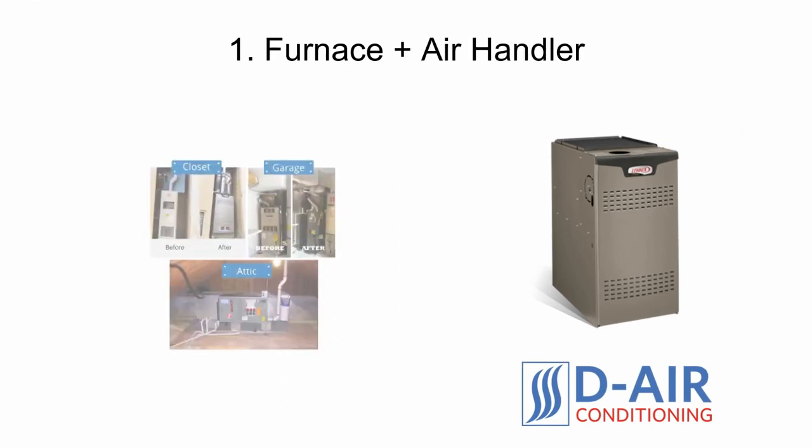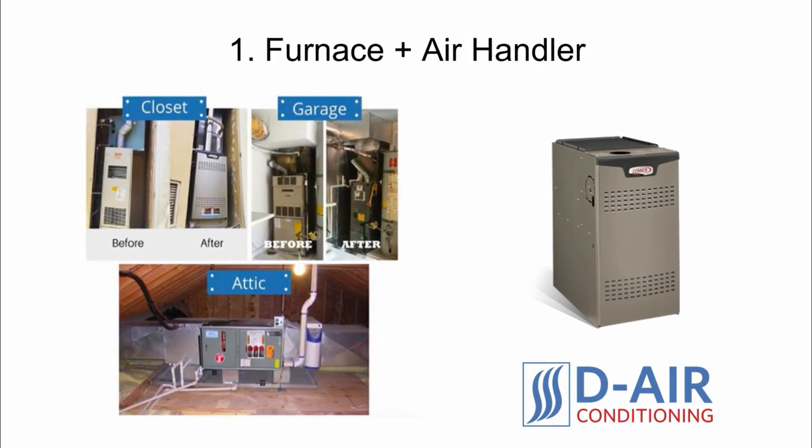1. Furnace and air handler. The natural gas or electric furnace is the most recognizable component of a central heating and central air conditioning system. The furnace's job is to keep your family warm during the winter and uses an internal coil system to heat up the air. The bottom portion of a furnace contains the blower or air handling fan. This fan circulates the air and pushes the heat into the duct system. When operating in the air conditioning mode, the furnace is turned off and just the blower is used to circulate the cool air.